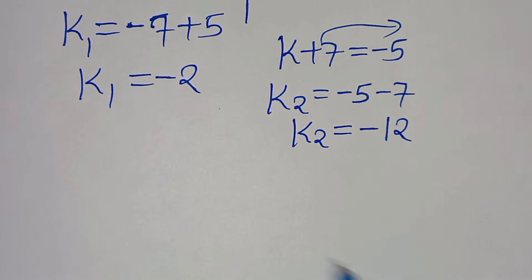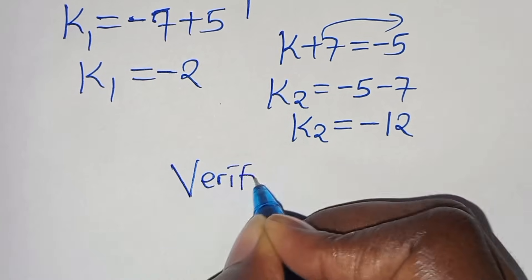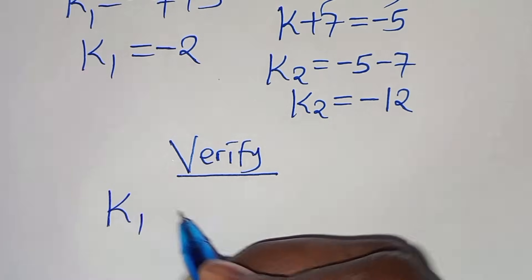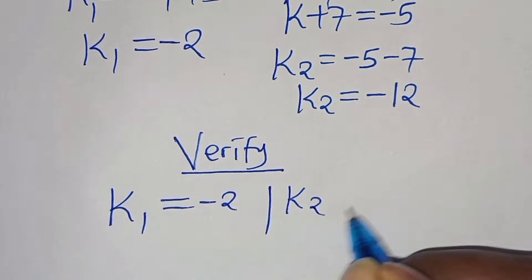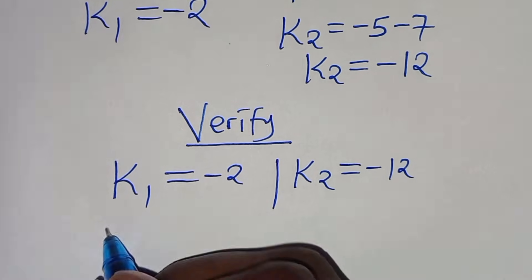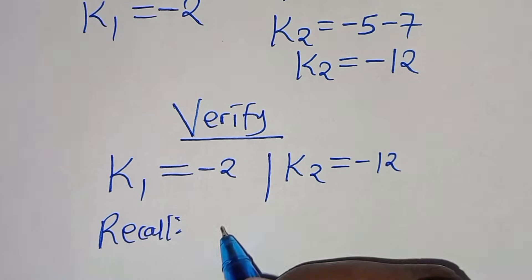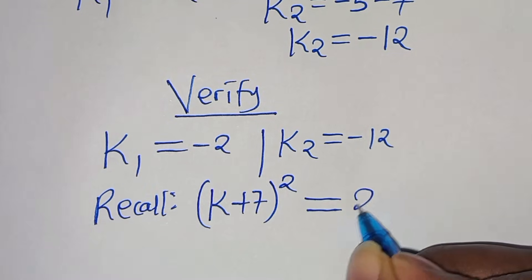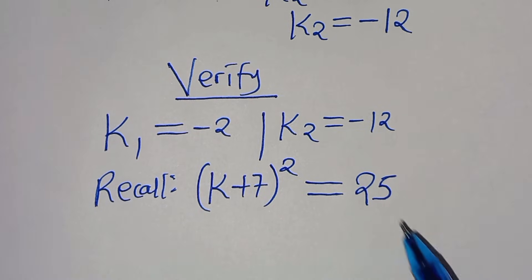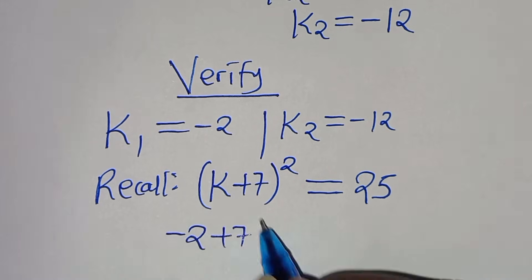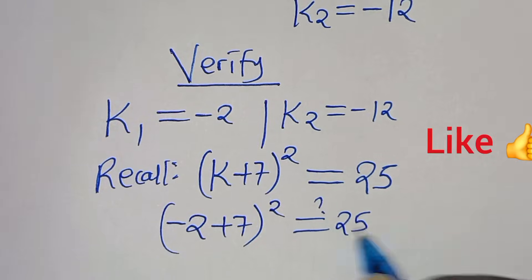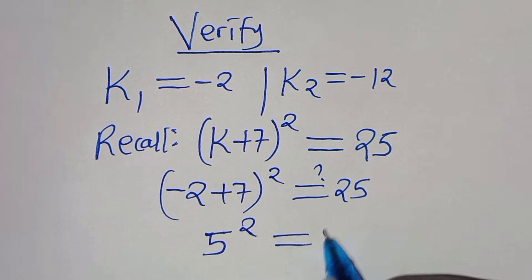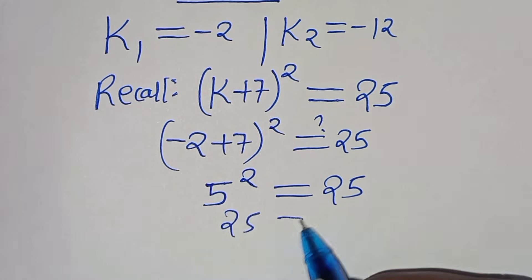Now let's verify that k₁ and k₂ satisfy the equation. We have k₁ equals minus 2 and k₂ equals minus 12. Recall that (k+7)² is supposed to give us 25. For k₁ equals minus 2: we have (minus 2 plus 7)² equals 5² equals 25. The left hand side is equal to the right hand side.